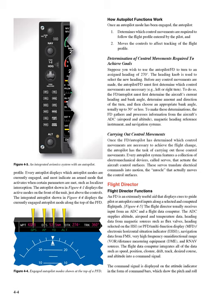The flight data computer integrates all of the data such as speed, position, closure, drift, track, desired course, and altitude into a command signal. The command signal is displayed on the attitude indicator in the form of command bars, which show the pitch and roll inputs necessary to achieve the selected targets.